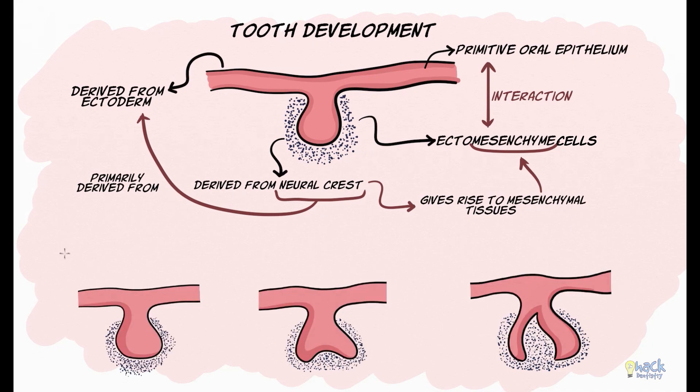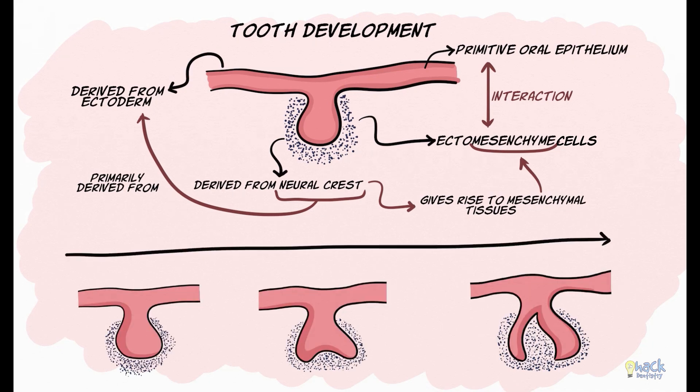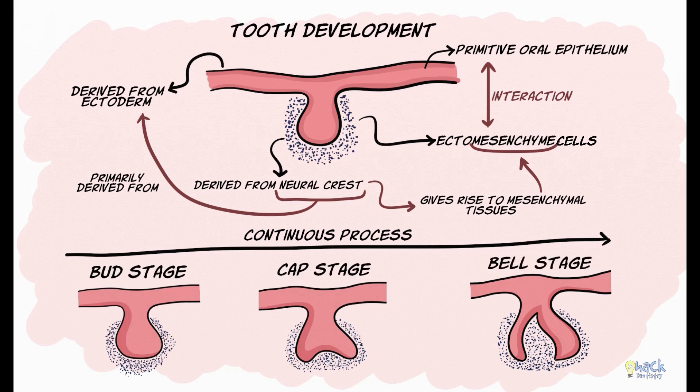Tooth development, though a continuous process, can be divided into three stages called the bud, cap, and bell stages. These stages are so named because of the shape the enamel organ assumes in each stage.